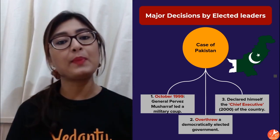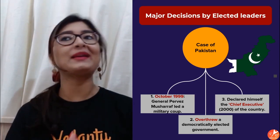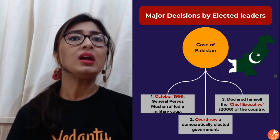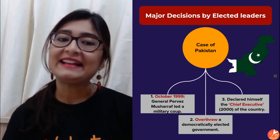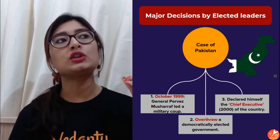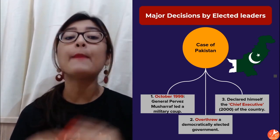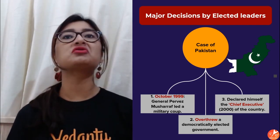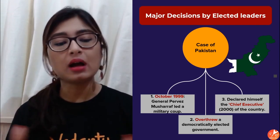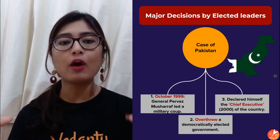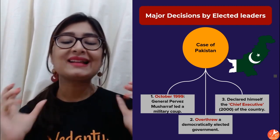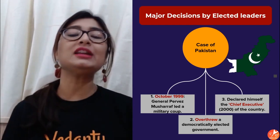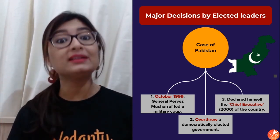So we're going to understand a few features of democracy because not all governments that hold elections are going to be democratic in true sense. That is not the only test. We'll start by talking about Pakistan — our neighbor — and General Musharraf, who was actually in the military of Pakistan. In October 1999, this person decided that he wants to be the head of the state.